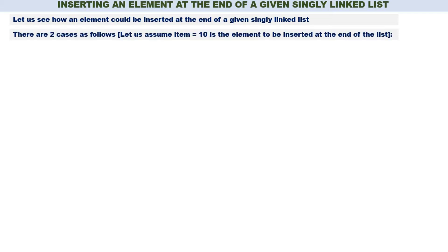My dear students, in this video we will discuss inserting an element at the end of a given singly linked list. Let us see how an element could be inserted at the end of a given singly linked list. There are two cases, and we will assume item = 10 is the element to be inserted at the end of the list.